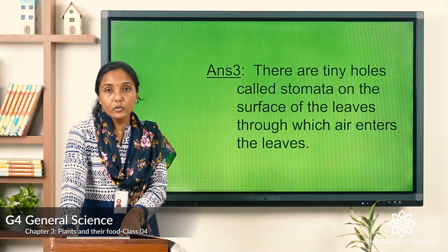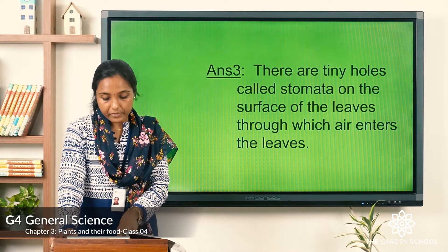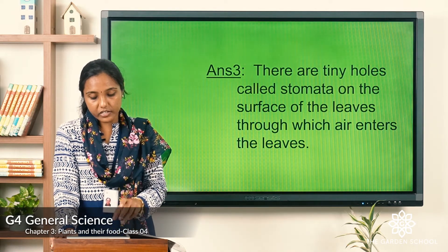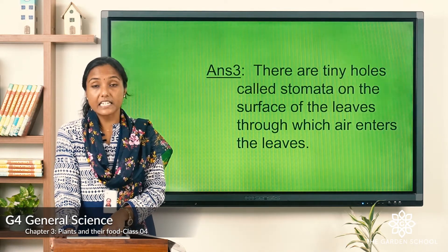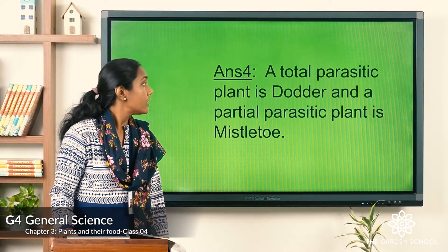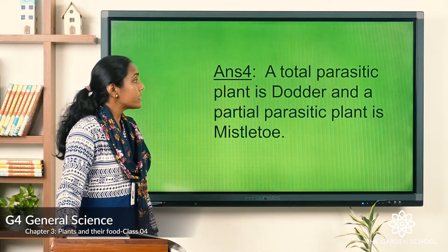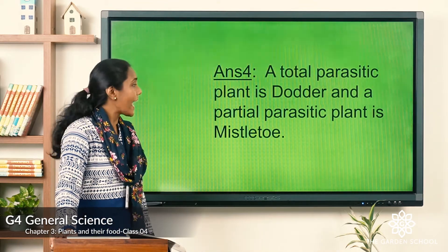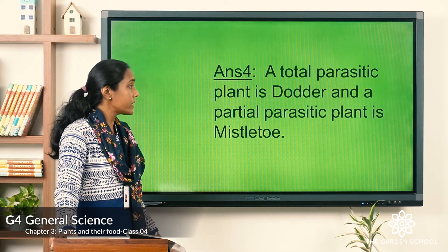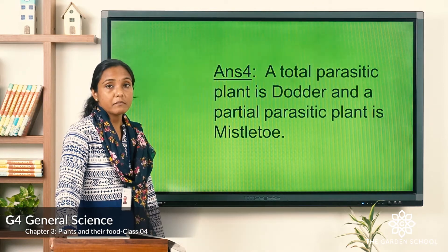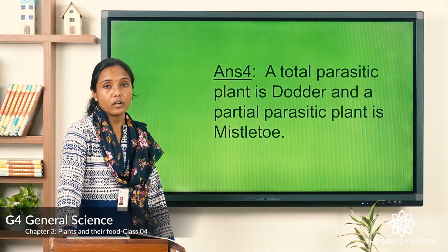Question four: name a total and a partial parasitic plant. Answer: a total parasitic plant is dodder, and a partial parasitic plant is mistletoe.